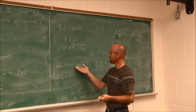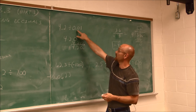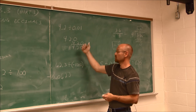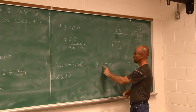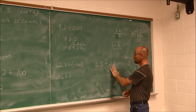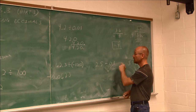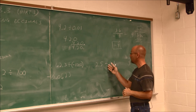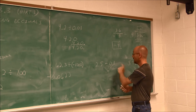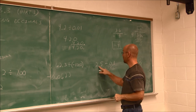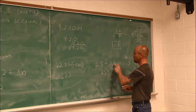To recap: if we're dividing by a whole-number factor of 10, move the decimal to the left. If we're dividing by a decimal factor of 10, move it to the right. For example, 2.5 divided by 0.1 — since 0.1 is one tenth, one factor of 10 — we move the decimal one spot to the right and get 25.